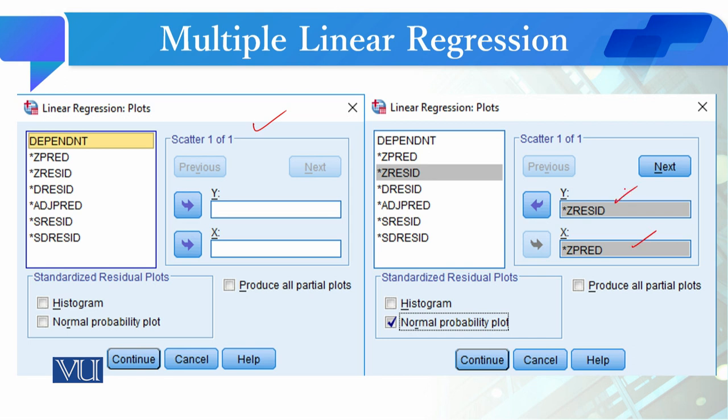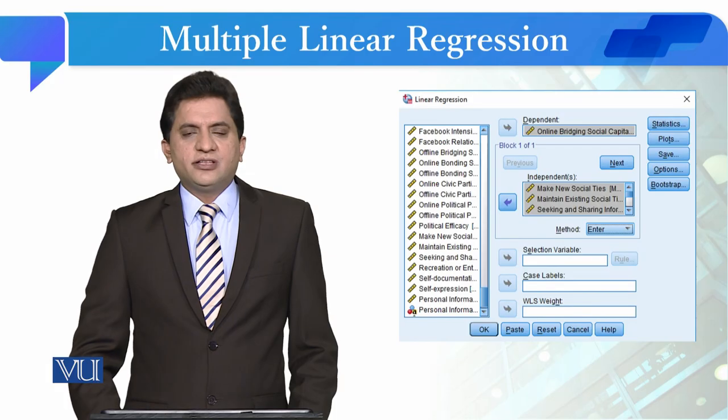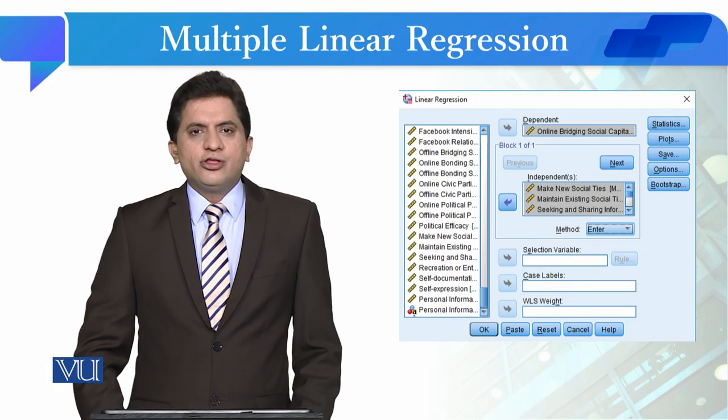Aur aapne normality probability plot ka box jo hai wo check kar dena hai. Iske baad jo hai hum isko continue karenge aur yahi options ke saath hum jab isko OK karenge.